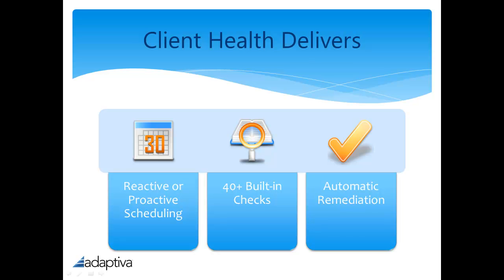Included with Client Health are over 40 Configuration Manager client-centric health checks, including those that diagnose and fix common Configuration Manager issues. Many of these checks specifically target things that Config Manager depends upon and therefore cannot directly correct itself, like WMI repository corruption and agent or service availability. Other checks target configuration items that Config Manager has no way of centrally configuring or fixing, like cache size, site assignment, and duplicate GUIDs.